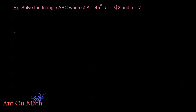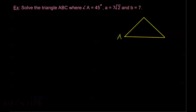First, let's solve triangle ABC where angle A equals 45 degrees, side A equals 7√2, and side B equals 7. It's always useful to draw out our triangles. Let's call this angle A at 45 degrees, angle B at the top, and angle C to the right. Side A is 7√2 and side B is 7. We need to solve for angle B, angle C, and side C.